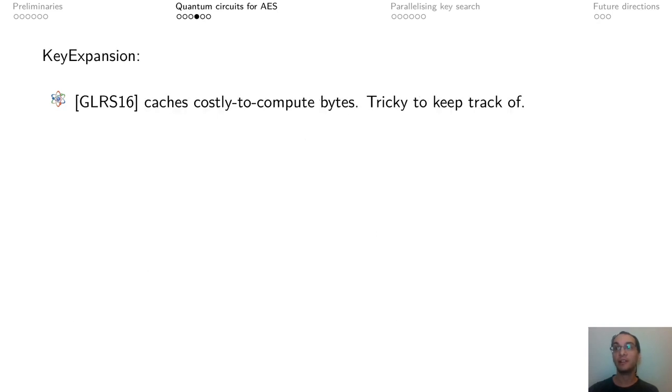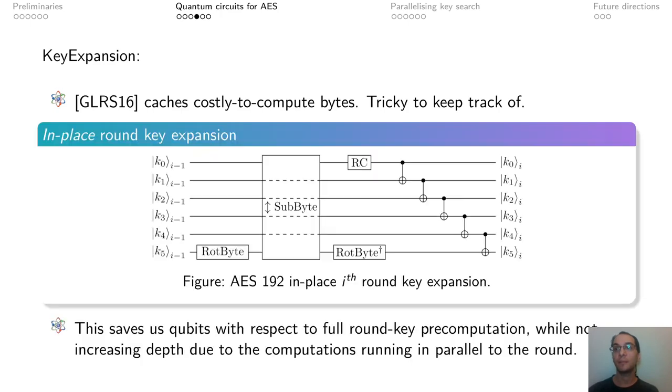For key expansion, Grassl et al. caches some bytes of the round key that are costly to compute, but this is tricky to keep track of while writing the implementation.